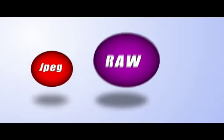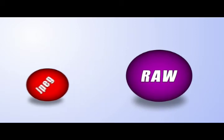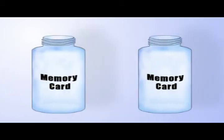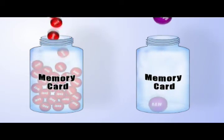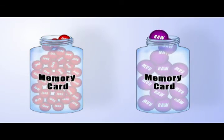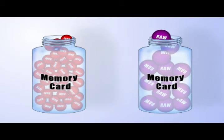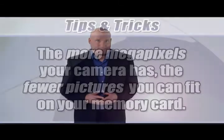Remember that JPEG images have a smaller file size than RAW. That means you can fit fewer RAW files on your memory card. Also, the more megapixels your camera has, the larger the file size of each picture.